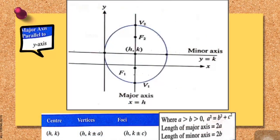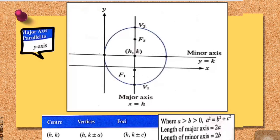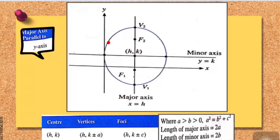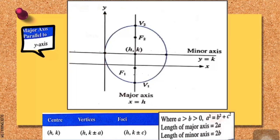Bismillahirrahim. Assalamu alaikum warahmatullahi wabarakatuh. This is the third video on the topic of ellipse, where we learn another type of ellipse which is an ellipse with major axis parallel to the y-axis. You can see here this is an ellipse with its major axis now parallel to the y-axis.